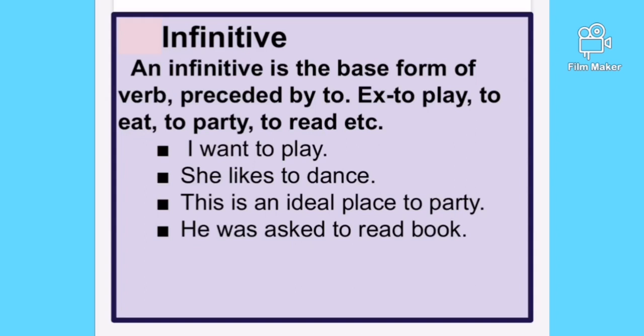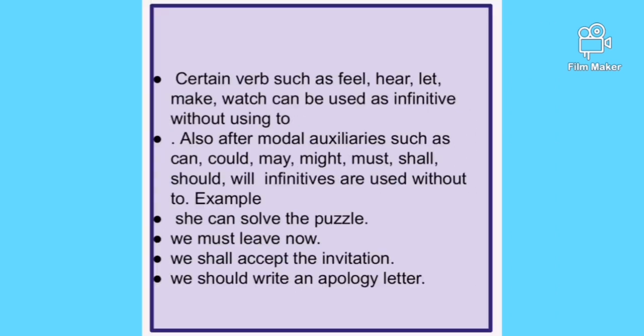An infinitive is a non-finite verb that expresses an action and is generally preceded by the preposition 'to.' It is the simplest to identify because the base form of the verb is used with 'to' before it. Examples: 'I want to play,' 'She likes to dance,' 'This is an ideal place to party,' 'He was asked to read a book.' The verbs to play, to dance, to party, to read are non-finite because they don't change with tense, number, or person.